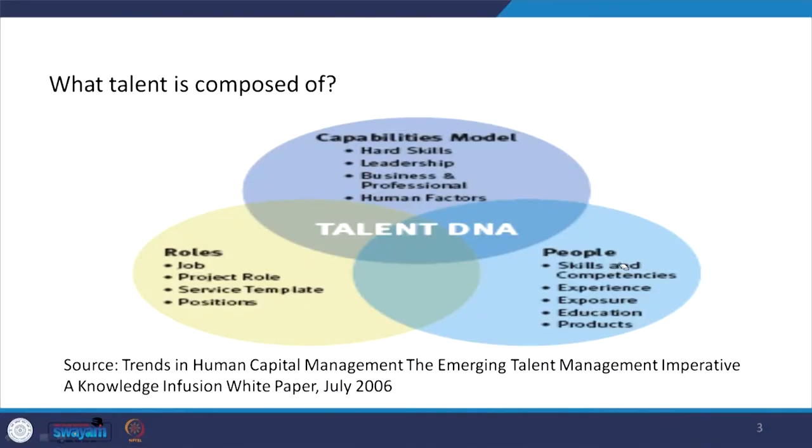The talent DNA will be roles, capabilities development, and people. Develop the capabilities of people, understand their roles, and develop people with the help of their skills, experience, exposure, education, and output. Products are output. These are the key components of the talent DNA framework.